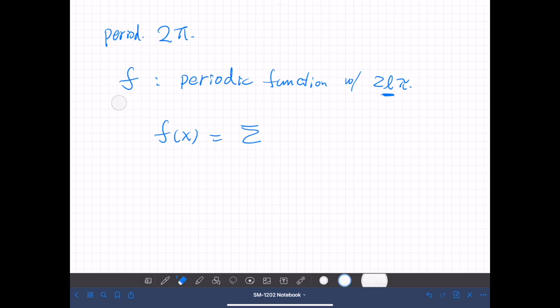Then we can show that f of x can be expressed as—of course we assume this is a smooth function, continuous and differentiable. Then we have, instead of exponential of ikx, we have ikx over L.